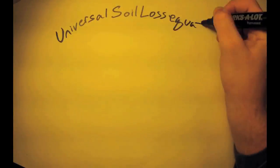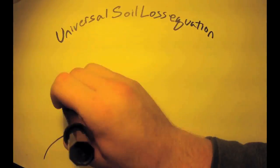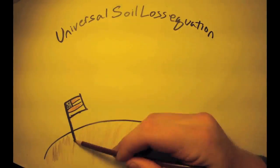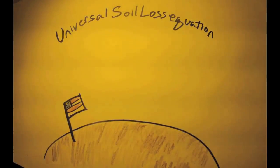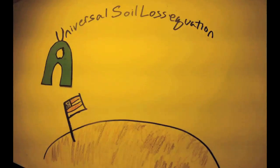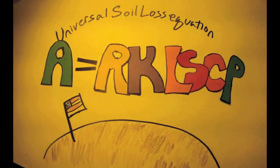The Universal Soil Loss Equation was developed by the USDA Soil Conservation Service in 1965. It was used to estimate average annual rate of soil loss to help landowners improve soil conservation practices. The equation can be described by A equals RKLSCP.